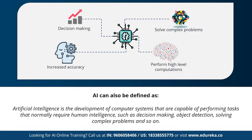Artificial intelligence helps in decision making, solving complex problems, performing high-level computations, and increasing the accuracy of predictions. These are the main features of AI.